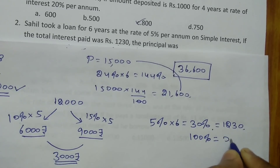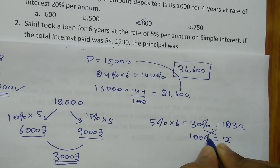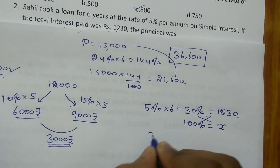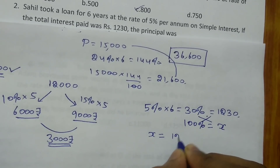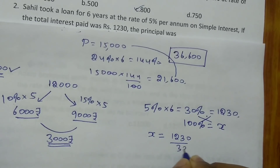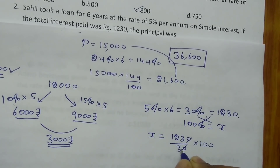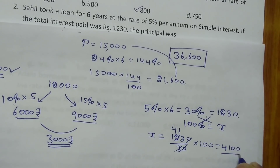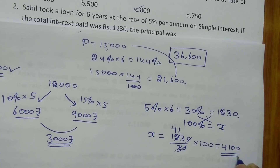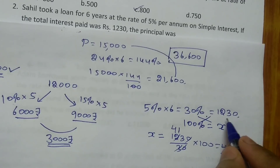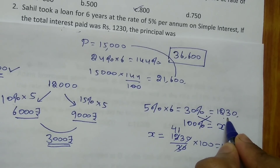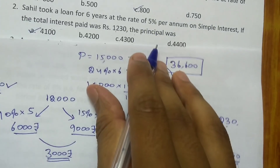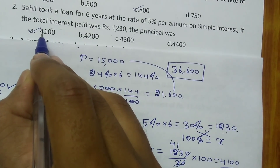So 100% is X. Using cross multiplication: X = 1230 divided by 30, multiplied by 100. Cancelling zeros, 3 into 41 gives 123, and 41 into 100 gives Rs.4100. So the person borrowed Rs.4100 from the bank, for which he paid Rs.1230 as simple interest. The principal was Rs.4100.